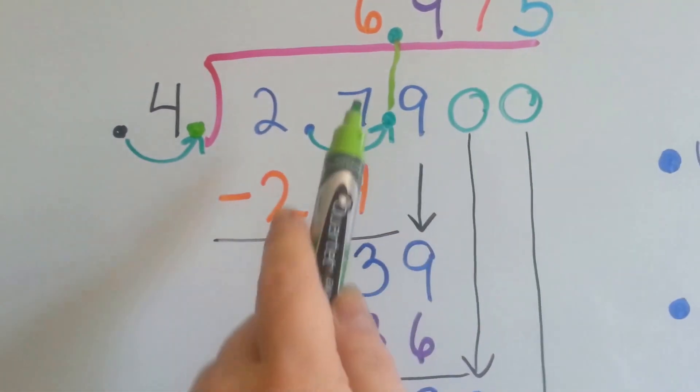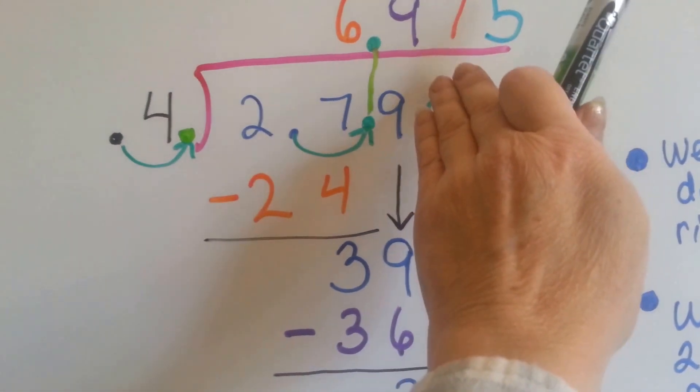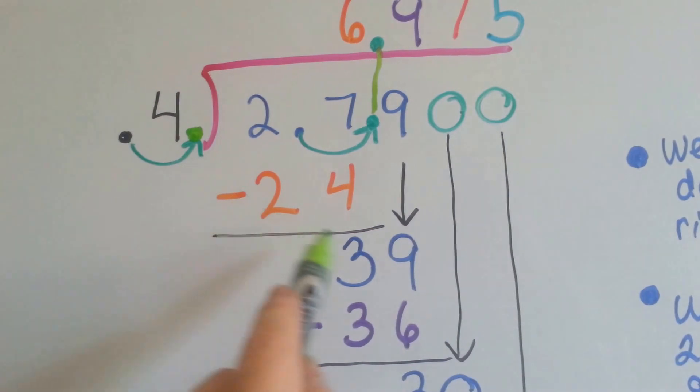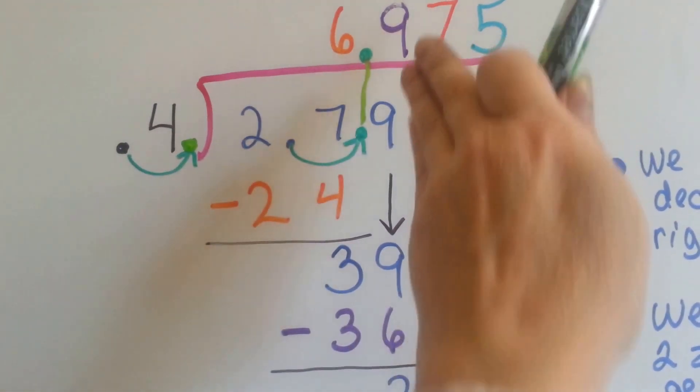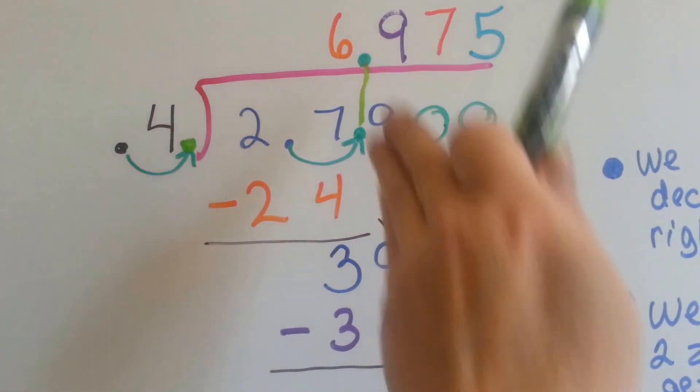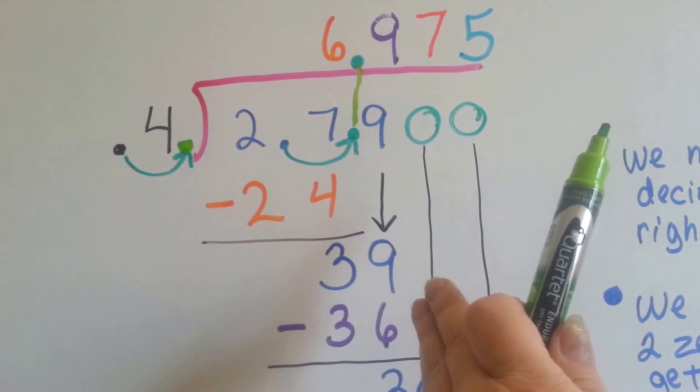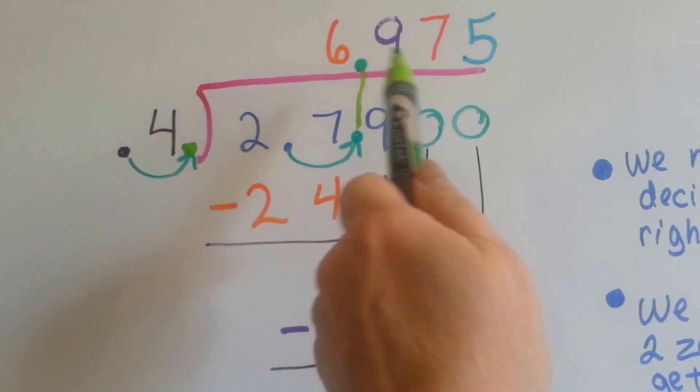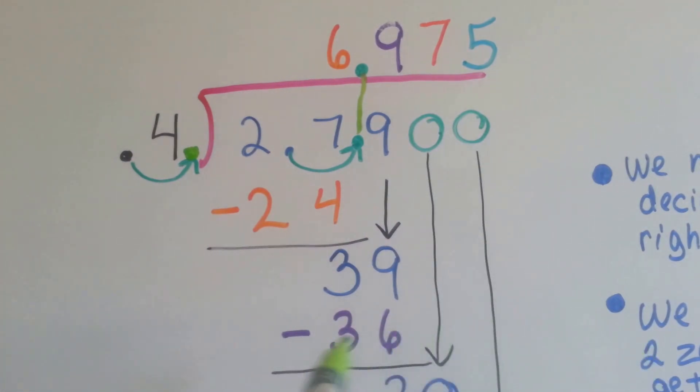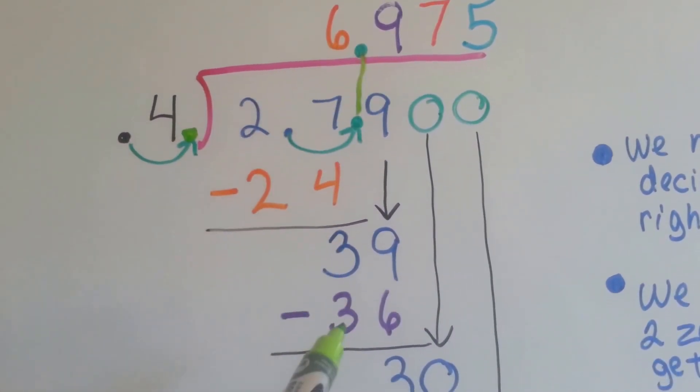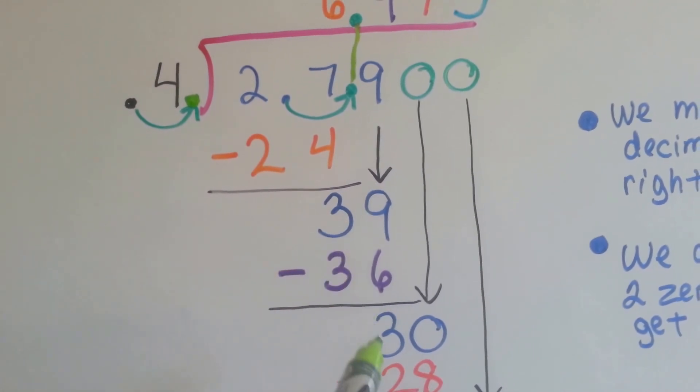Now it's the 9's turn to come down, and we ask ourselves, how many times can 4 fit into this 39? 4 times 6 is 24. 4 times 9 is 36. That fits perfectly. 4 times 10 wouldn't fit here. You can't put a 10 in this place, right? So we do our 4 times 9, which is 36, and we do our subtraction. And 39 take away 36 is 3.